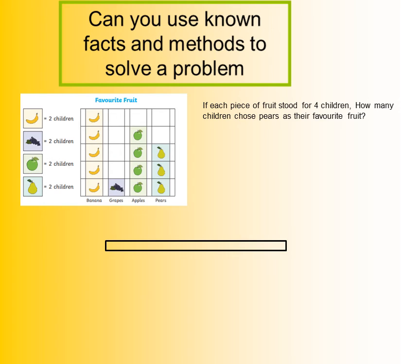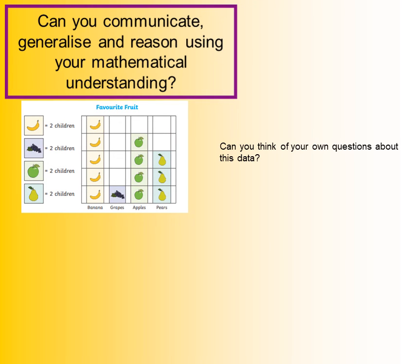What if each piece of fruit stood for four children instead of two? How many children chose pears as their favourite fruit? There are three pears on the chart and if each pear represents four children, the times table question would be four times three. You should have 12 as your answer. Now see if you can think of your own questions to go with this data — write two questions down and have a go at answering them.